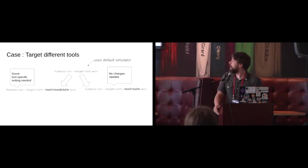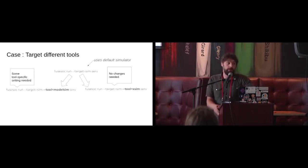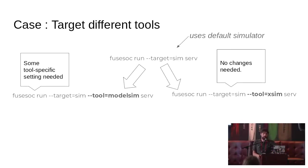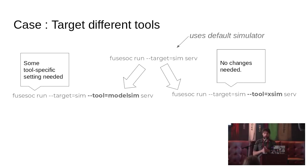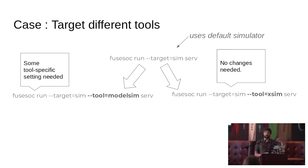A small use case: this is an example where I run FUSUC on a core called SERV — which you might have heard about — with a target called sim. You can have a target for simulation, targets for different boards. It will use the default simulator as described in the core description file. I can then change the tool to something else — that's the only change I need to make in most cases. I might need to disable some warning flags, and the FUSUC core description files support disabling and enabling options per target and per tool.